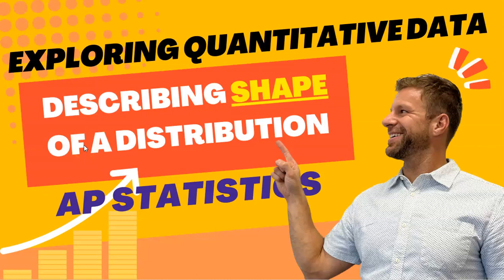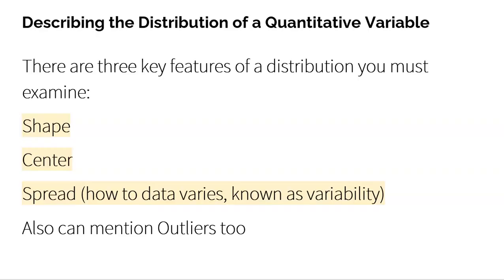Let's first remember what a distribution is. A distribution is what values your variable can take on and how often it takes on those values. When we talk about describing a distribution, there are really three key things you have to talk about: the shape, the center, and the spread. You need all three of them to fully understand the distribution.